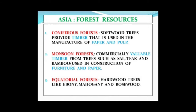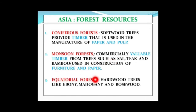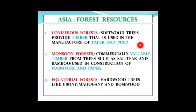There are different types of forests in Asia like coniferous forests, mostly found in the taiga region as we have learnt in earlier modules, monsoon forests growing in the monsoon region, and equatorial forests growing in the equatorial region. The timber from coniferous forests is softwood, mostly used to make paper and pulp.